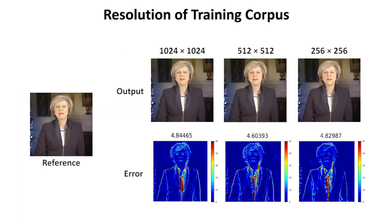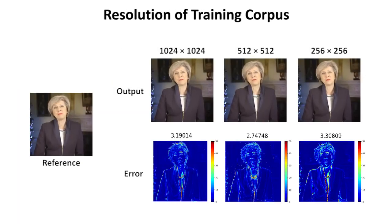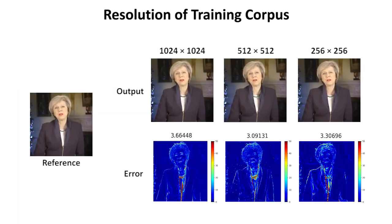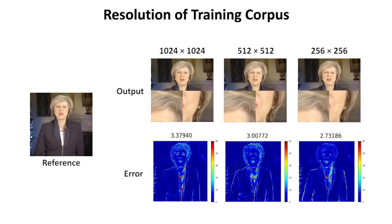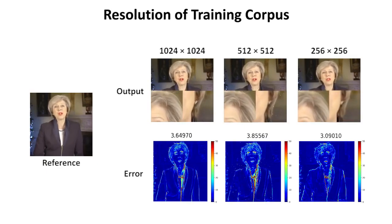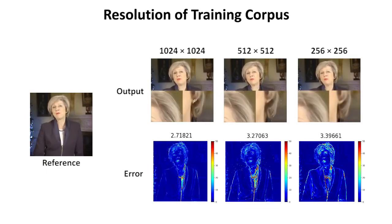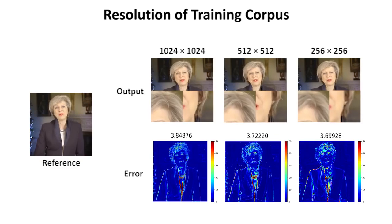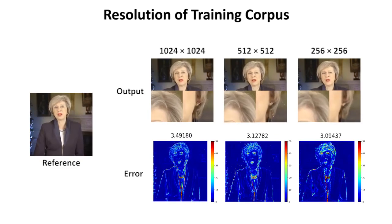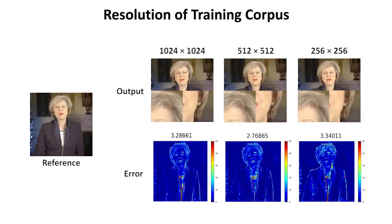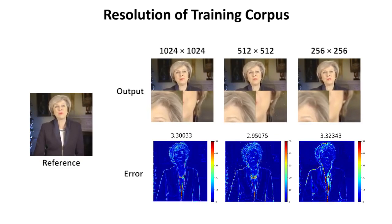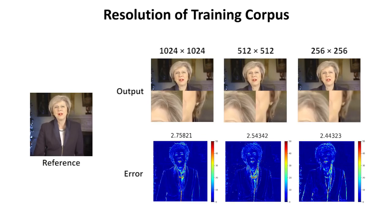We now evaluate different resolutions of the training corpus. The quality of results is comparable for different image sizes. However, due to significantly faster network training, we use a resolution of 256 by 256 pixels for most of our results.